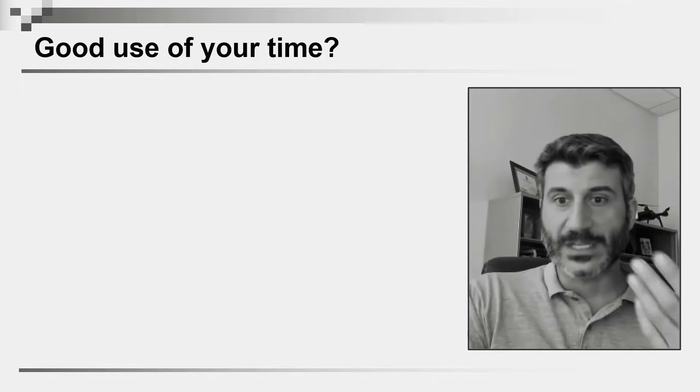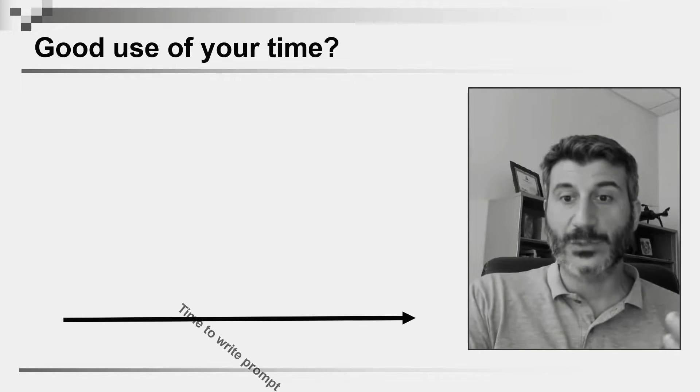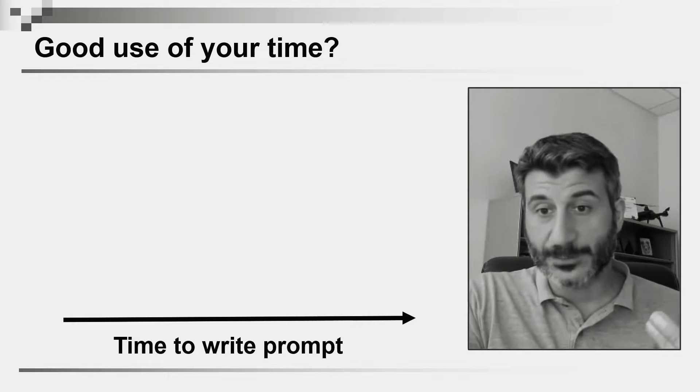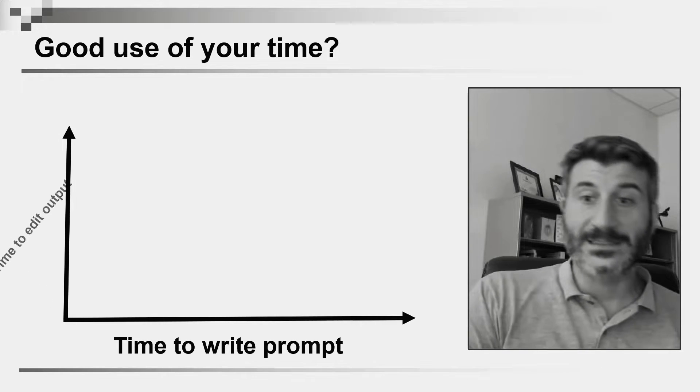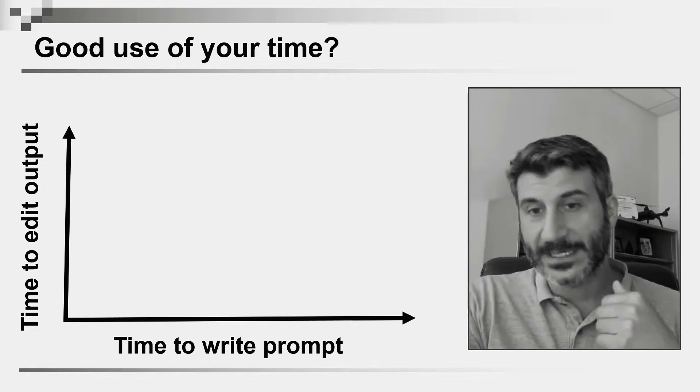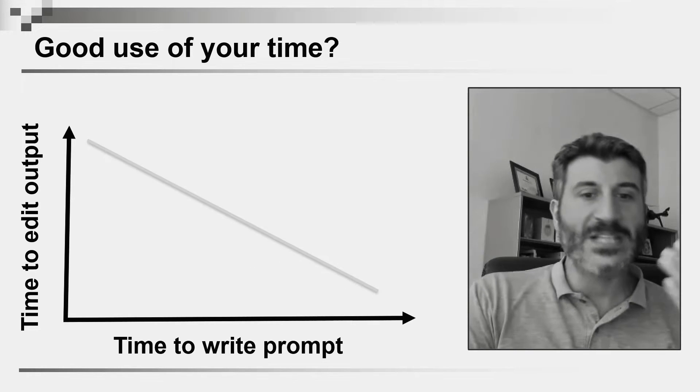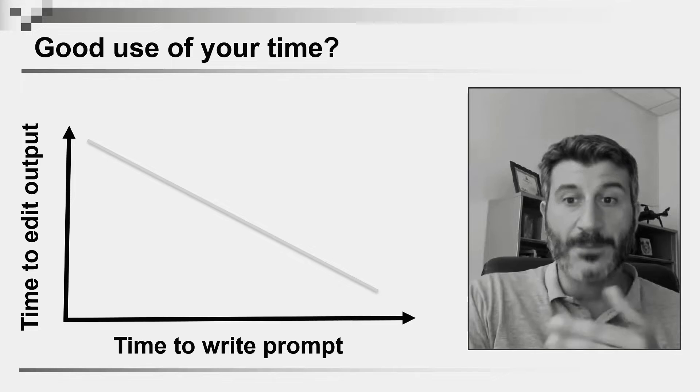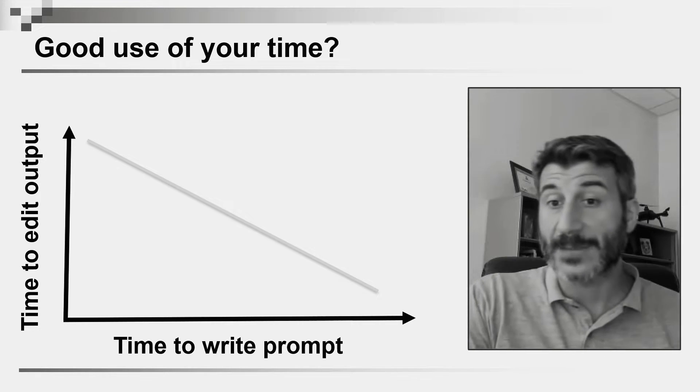If we would like to represent this using a graph, on the x-axis we could put the time that it takes to write the prompt, on the y-axis the time that it takes to edit the abstract that is returned by ChatGPT, and clearly as we invest more time writing the prompt, it's going to take less and less time in order to improve the abstract.